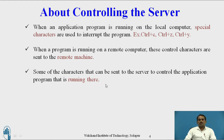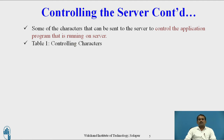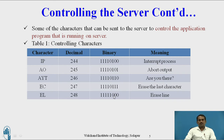Some characters can be sent to the server to control the application program running on the remote machine. These control characters and their decimal and binary values are: IP (244) — Interrupt Process; AO (245) — Abort Output; AYT (246) — Are You There; EC (247) — Erase Character; EL (248) — Erase Line.